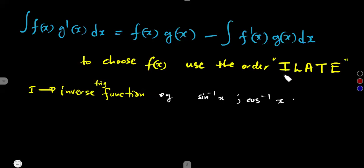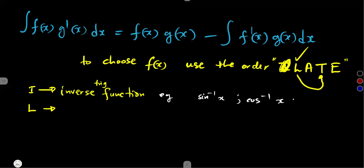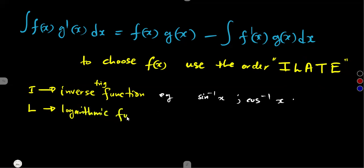The second part after I is L, representing the logarithmic function. When you are given a logarithmic and an algebraic, what are you going to choose to be f(x)? You choose the logarithmic. When there is a logarithmic and a trigonometric, you choose the logarithmic — the first part according to this order. The L is for logarithmic functions in the form of ln(ax), for example.